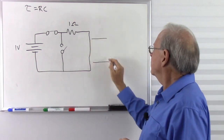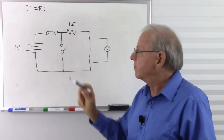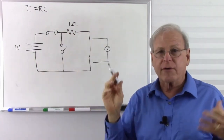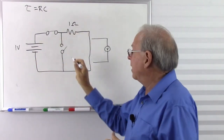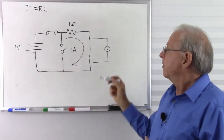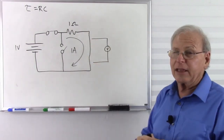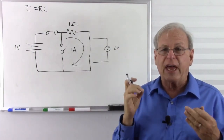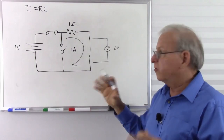With a voltmeter across the capacitor at that moment, what do we read? We have 1 volt and 1 ohm — with the capacitor acting as a short, our circuit is just a battery and resistor in series. Using Ohm's law: 1 volt ÷ 1 ohm = 1 amp of current. The voltmeter reads zero volts because the red and black leads are essentially connected through a short circuit. There's no resistance across the capacitor, so no voltage.